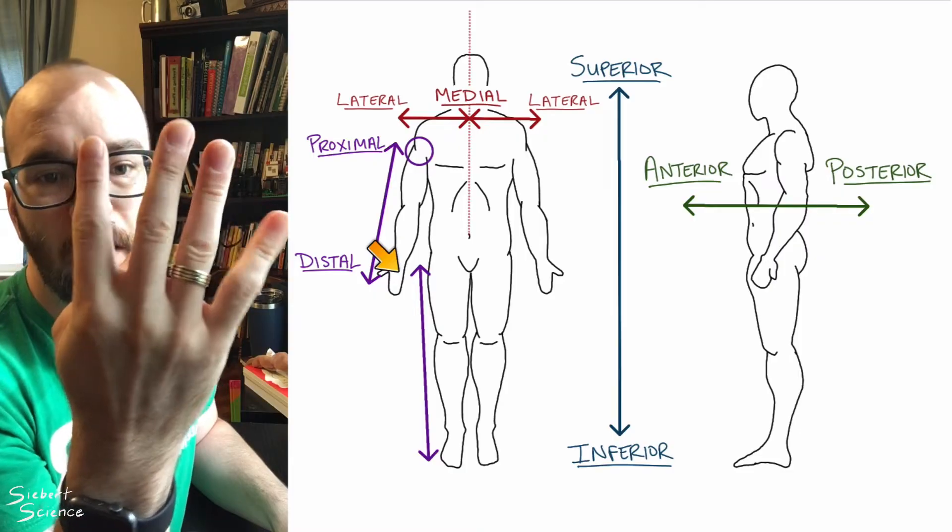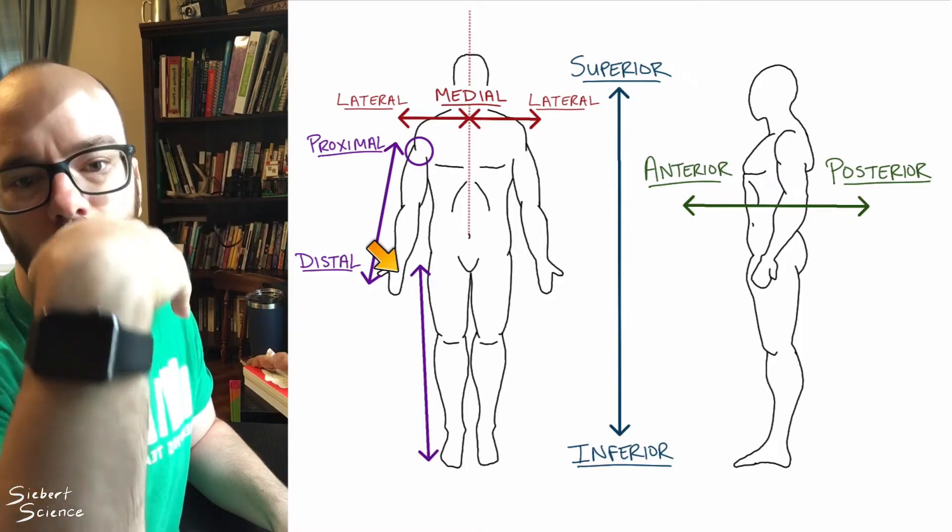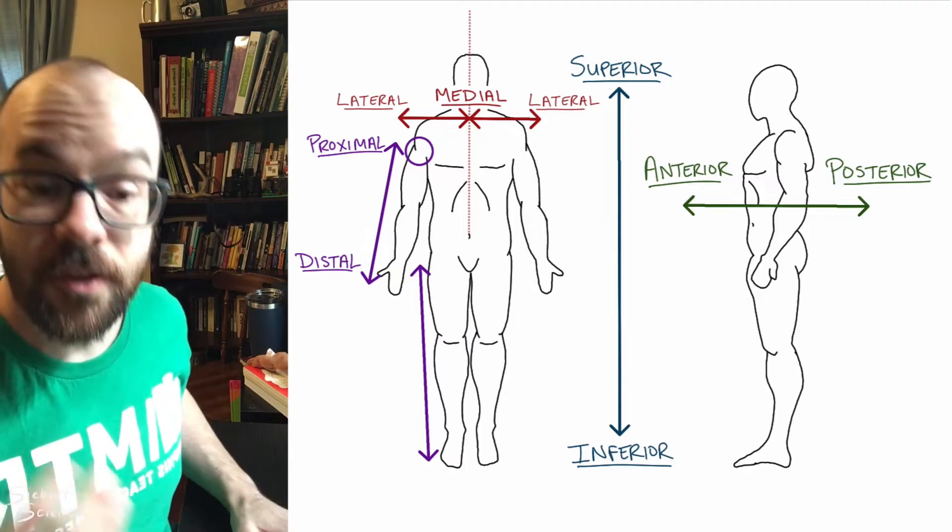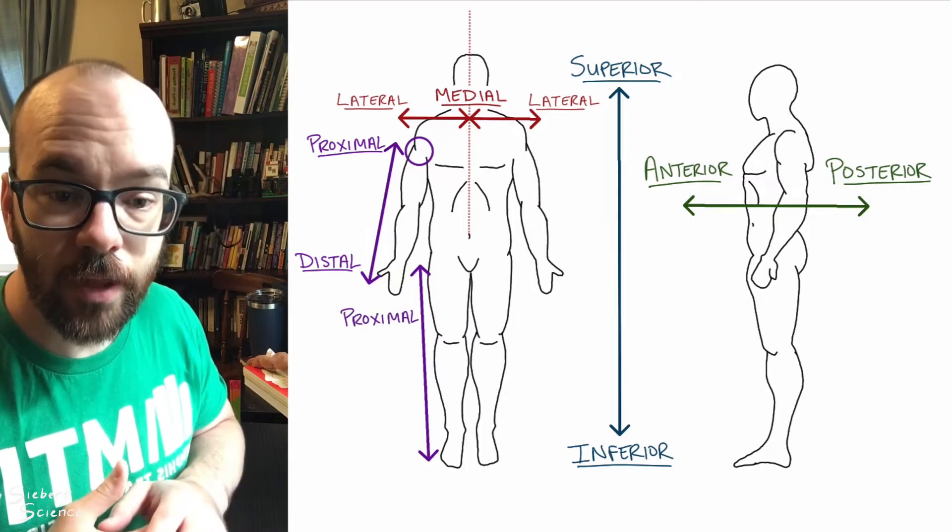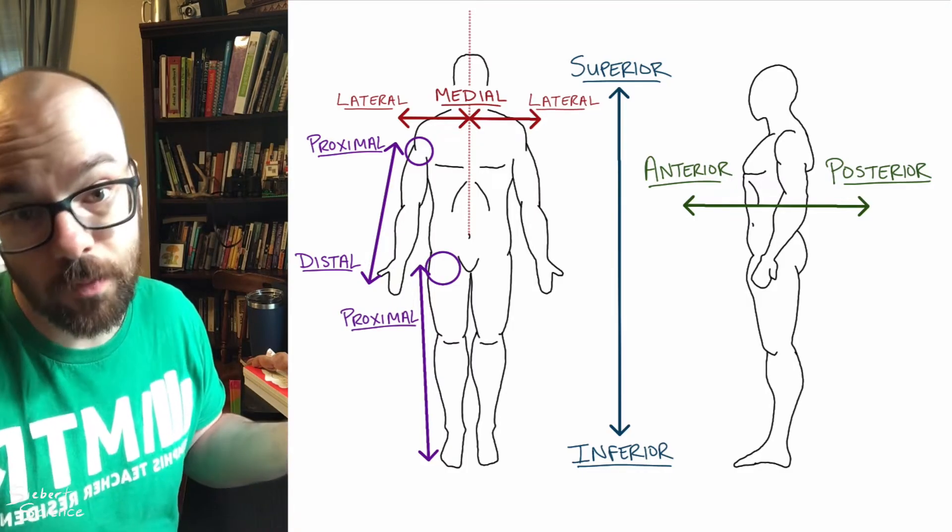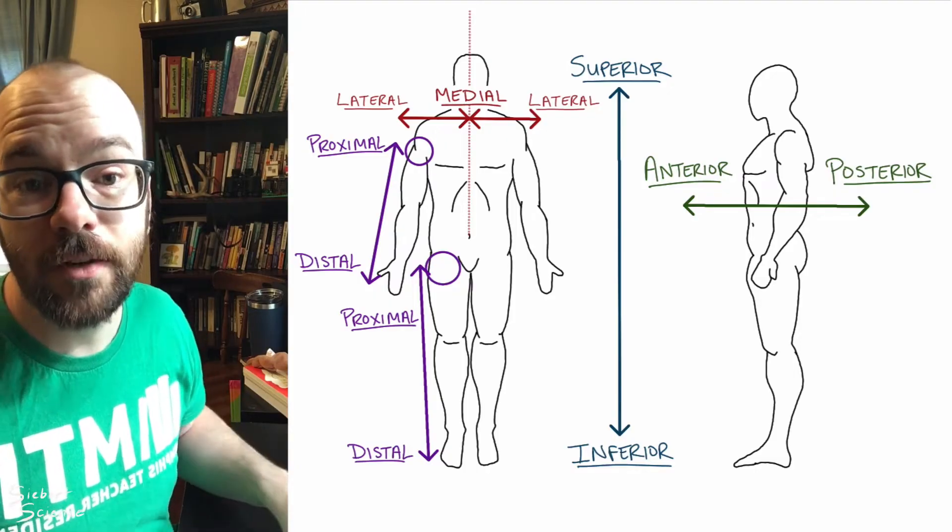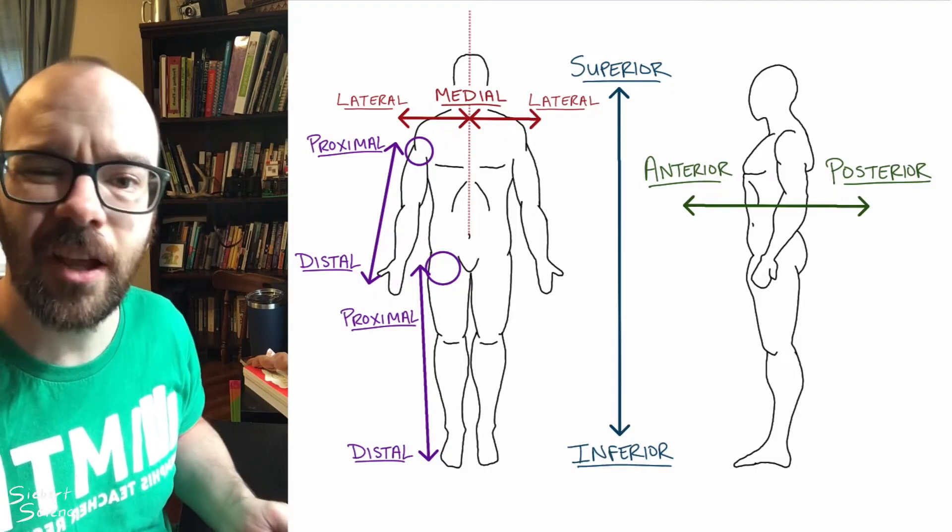Or if we just look at the hand, my fingers are more distal than my wrist. The same thing goes for the legs. In the legs, proximal will be closer to the point of attachment of the legs, which are the hips. And distal means far from the point of attachment. So like your feet, for example, would be very distal.